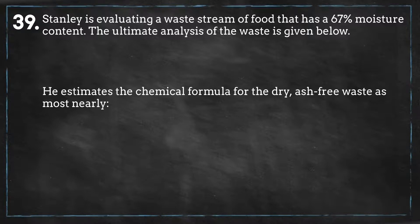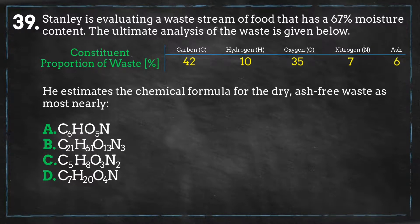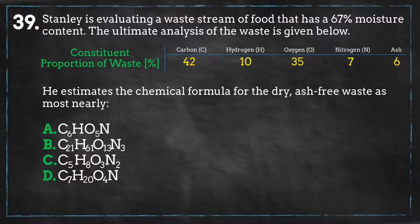Stanley is evaluating a waste stream of food that has a 67% moisture content. The ultimate analysis of the waste is given below. He estimates a chemical formula for the dry ash-free waste as most nearly: A) C6H O5N, B) C21H61O13N3, C) C5H8O3N2, or D) C7H20O4N. Pause the video and give yourself five minutes to solve the problem.